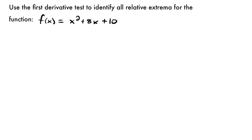The first step to using the first derivative test is to find the critical values for your function. The critical values are where the slope is zero, and those are the points that are going to have the potential to be either a relative minimum or a relative maximum. So let's start by taking the derivative of this function, and then we'll set it equal to zero, which is how we're going to find those critical values.